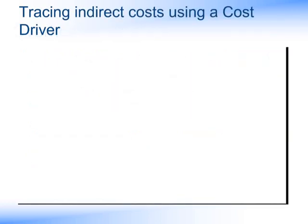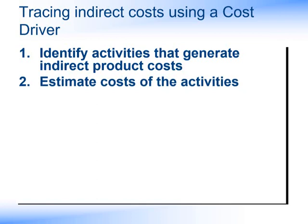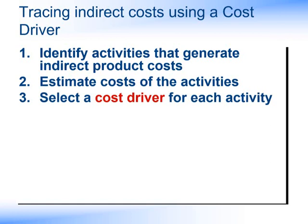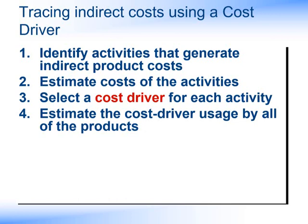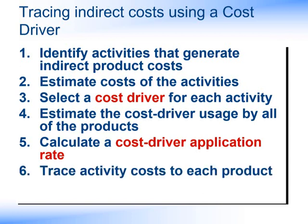We can look at ABC as a series of steps. In our first step, we're identifying activities that generate indirect product costs, such as materials handling or machine set-ups. We can then estimate the cost of these activities. For example, we might have ten people working in a central purchasing department — we can take their salaries and associated costs, building costs, etc., and arrive at the cost of the central purchasing activity. We then need to select a cost driver; in our central purchasing example, this might be the number of purchase orders raised. We can then estimate the cost driver usage for all products produced — how many purchase orders are they likely to raise during the next year? We then calculate our cost driver application rate, arriving at a cost per purchase order, and then trace these activities to each product.